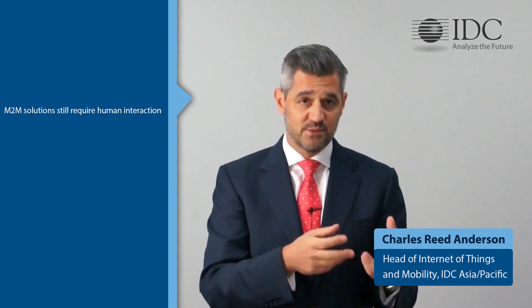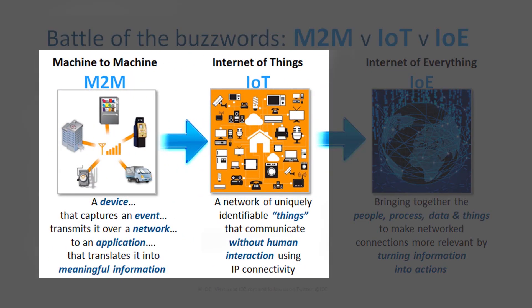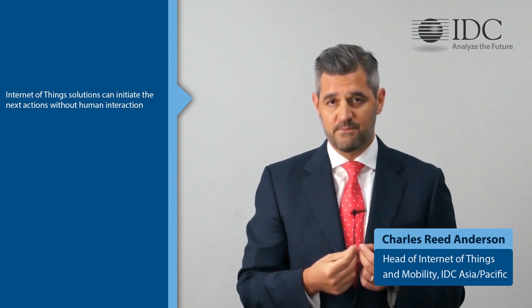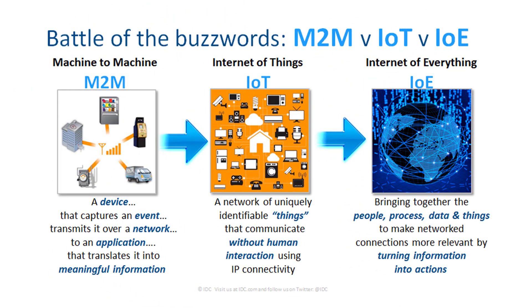So what we want to see is machine-to-machine evolve into the Internet of Things. IDC's definition is: a network of uniquely identifiable things that communicate without human interaction using IP connectivity. In that same shipping container scenario, once information is captured and enters an intelligent system, that system should automatically know it needs to open a vent or turn on the humidifier — initiating those next actions without human interaction. Finally, the Internet of Things will evolve into the Internet of Everything: the bringing together of people, process, data, and things to make network connections more relevant by turning information into actions.